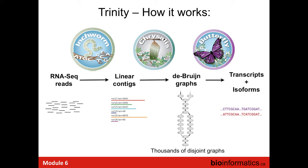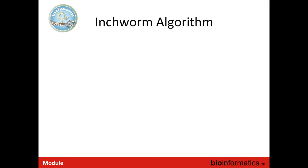Chrysalis's job is to find the different Inchworm contigs that correspond to the same gene — representing unique parts of an alternatively spliced gene — and cluster them together. Once we have clusters of contigs representing different parts of isoforms, Chrysalis constructs the proper de Bruijn graph structure. Then Butterfly takes the original reads and threads them through the graph structure to identify paths best supported by the reads, and provides the final transcript sequences.